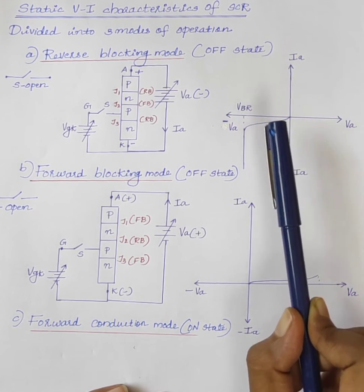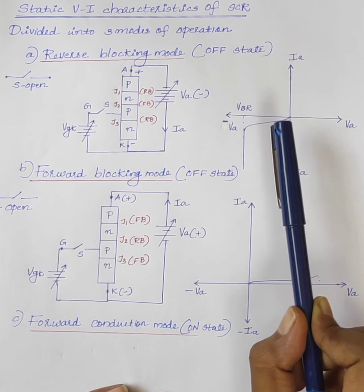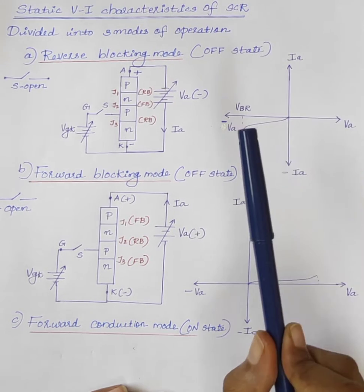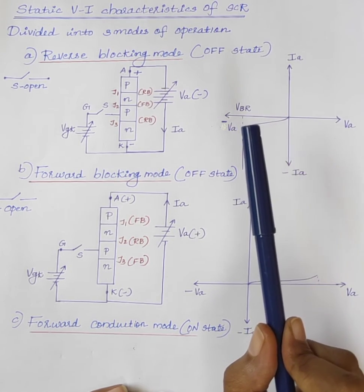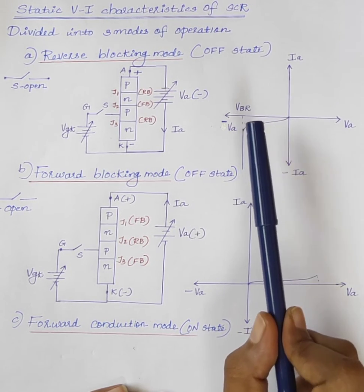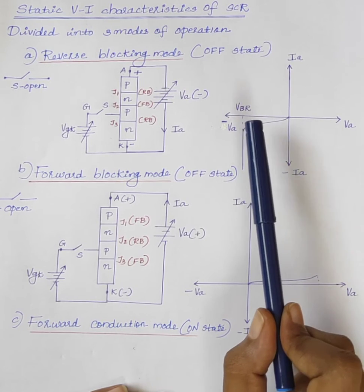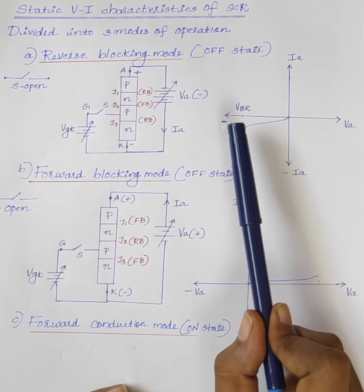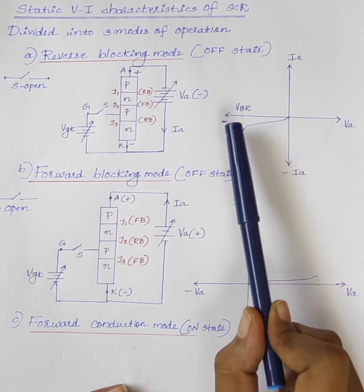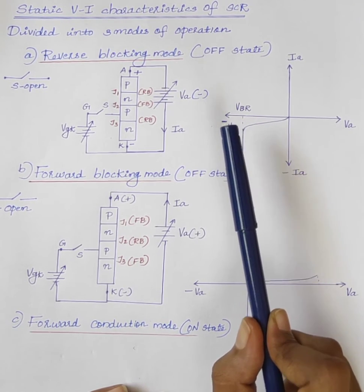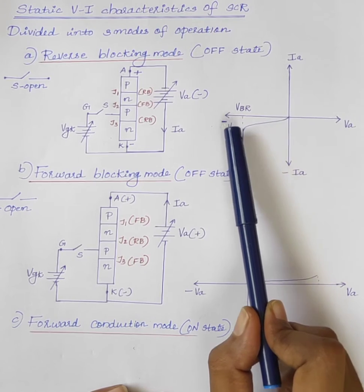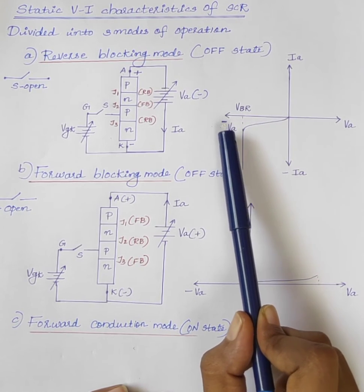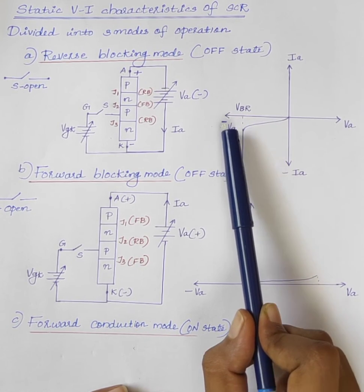A large current associated with this breakdown voltage produces more losses in the SCR. This may lead to thyristor damage. The thyristor in reverse blocking mode may therefore be treated as an open switch — this is the off state of the switch.